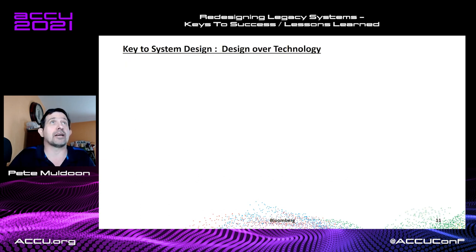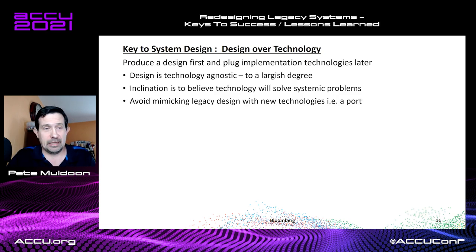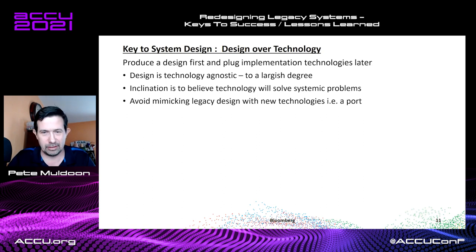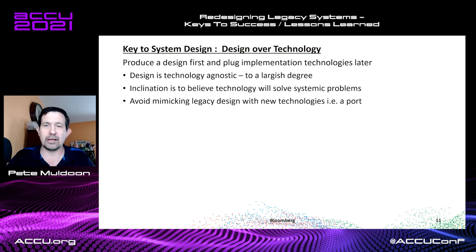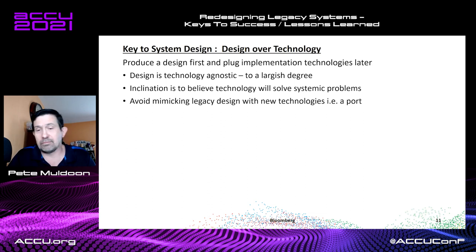Once we have that, the next key is design over technology. You can produce your design first, based on the data you've looked at — how it flows through the system, where the problems are — and produce a design that tackles those problems. After that, plug in your implementation technologies. Design is largely technology-agnostic: you could put in most any database and adapt your design to fit it. Your distribution to front ends — how you send and notify — you can substitute most anything in.